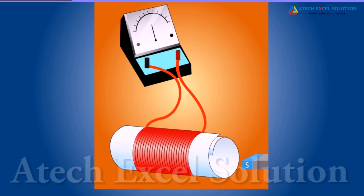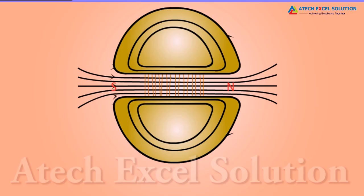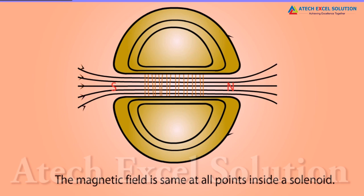Solenoid is a coil of many circular turns of insulated copper wire wrapped closely in shape of a cylinder. The pattern of magnetic field lines around a current carrying solenoid is same as that of a bar magnet. The magnetic field is same at all points inside a solenoid.